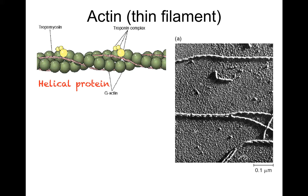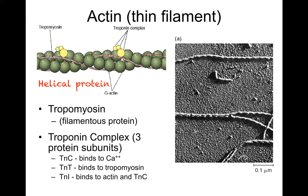Let's look at the actin or the thin filament. It's a helical protein, and winding around it is another protein called tropomyosin, and then the troponin complex. The troponin complex has three subunits: one that binds to calcium, one that binds to tropomyosin, and a third that binds to the actin and the troponin C. Calcium binds right there, and we're going to talk about that because it's a really big deal.